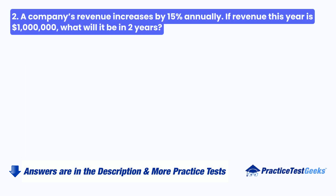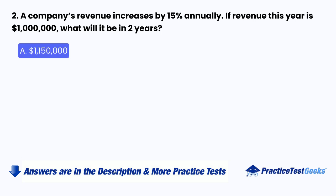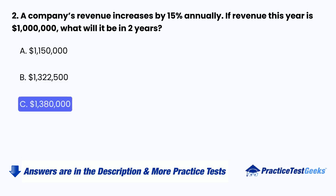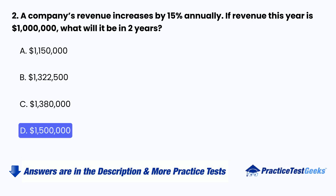Question 2: A company's revenue increases by 15% annually. If revenue this year is $1 million, what will it be in two years? A. $1,150,000. B. $1,322,500. C. $1,380,000. D. $1,500,000.